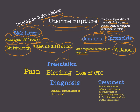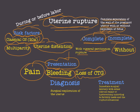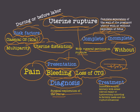The presentation of uterine rupture includes sudden severe pain and bleeding. Loss of CTG is also seen — on the fetal heart monitor, an isoelectric line will be observed. The confirmatory diagnosis is by surgical exploration of the uterus.